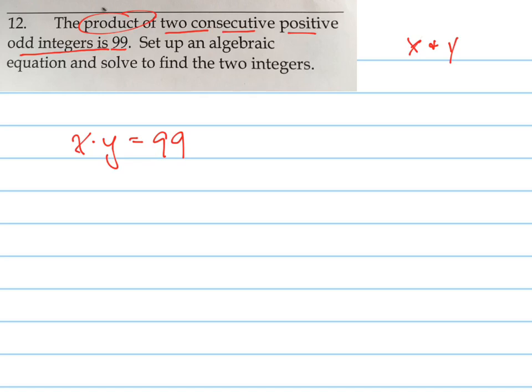But I also know, since they're odd and consecutive, what do I know about how they're related to each other? What is consecutive? Consecutive means like 1 and 3 are consecutive odd integers, or 17 and 19 are consecutive odd integers. So I know that x has to equal y plus 2. I know they're going to be 2 away from each other.